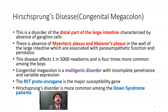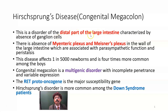Megacolon means that the colon is dilated and it is a congenital disorder. This is a disorder of the distal part of the large intestine, characterized by absence of ganglion cells. Usually the distal part is affected, but other parts of the large intestine may also be affected.